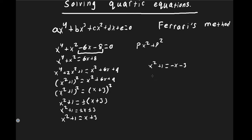Moving everything to the left for the first equation gives x² − x − 2 = 0, which factors as (x + 1)(x − 2) = 0. The second equation gives x² + x + 4 = 0, which has no real solutions since its graph lies entirely above the x-axis.